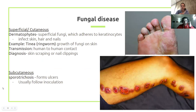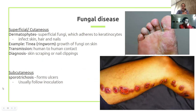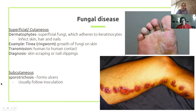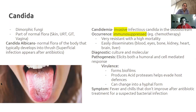Some fungal disease examples: ringworm and tinea — not actually a worm, it's a fungal infection of the nails and skin. Sporotrichosis is known as rose gardener's disease — you can get pricked by a thorn, allowing entry into the body, and the classic finding is ulcers under the skin following the lymph vessels up the limb. Fungal infections are very difficult to treat and take a long time, requiring prolonged antimicrobial courses.